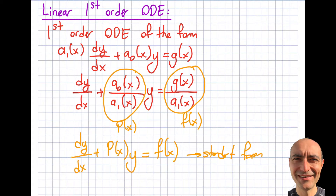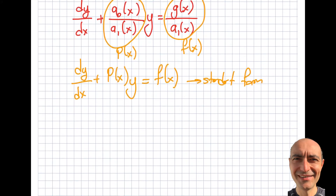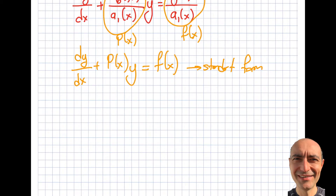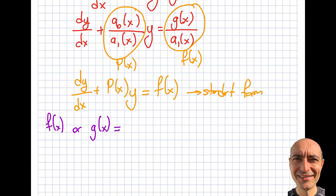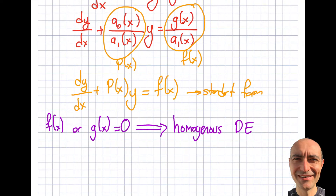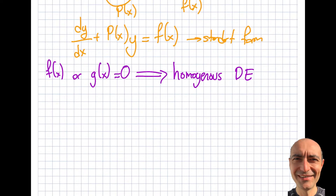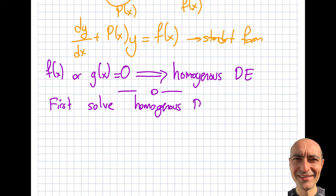This is the form I want you to use whenever you first see an equation like this. I'm also going to introduce a definition that will come in handy in many types of equations. If f(x) — or equivalently g(x) — is equal to zero, meaning the right-hand side of the equation is zero, then I have a special name for these equations. I call these homogeneous equations.